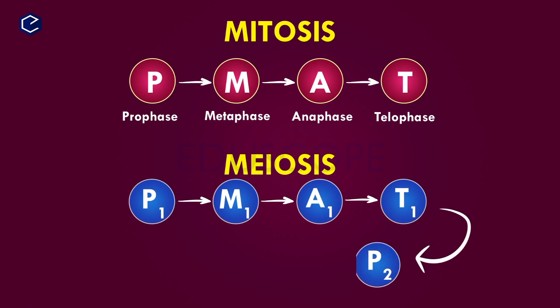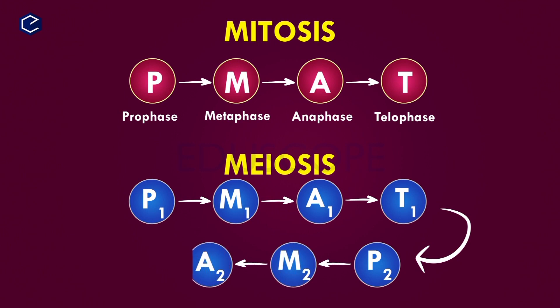Then meiosis II follows, with its own stages: prophase 2, metaphase 2, anaphase 2, and telophase 2. This completes meiosis phase 2.